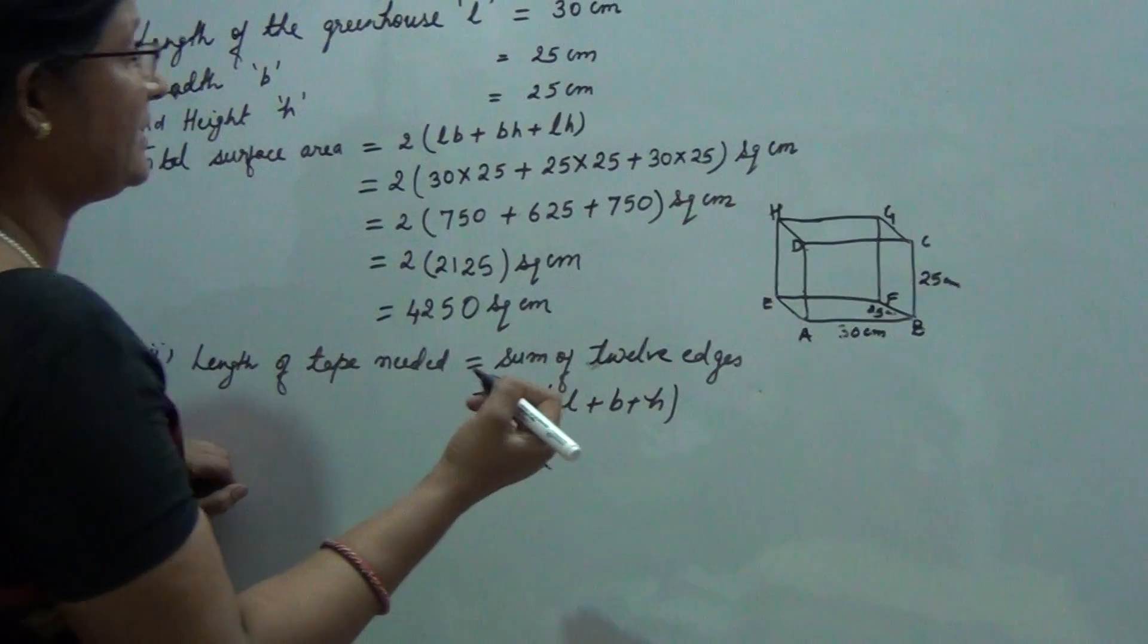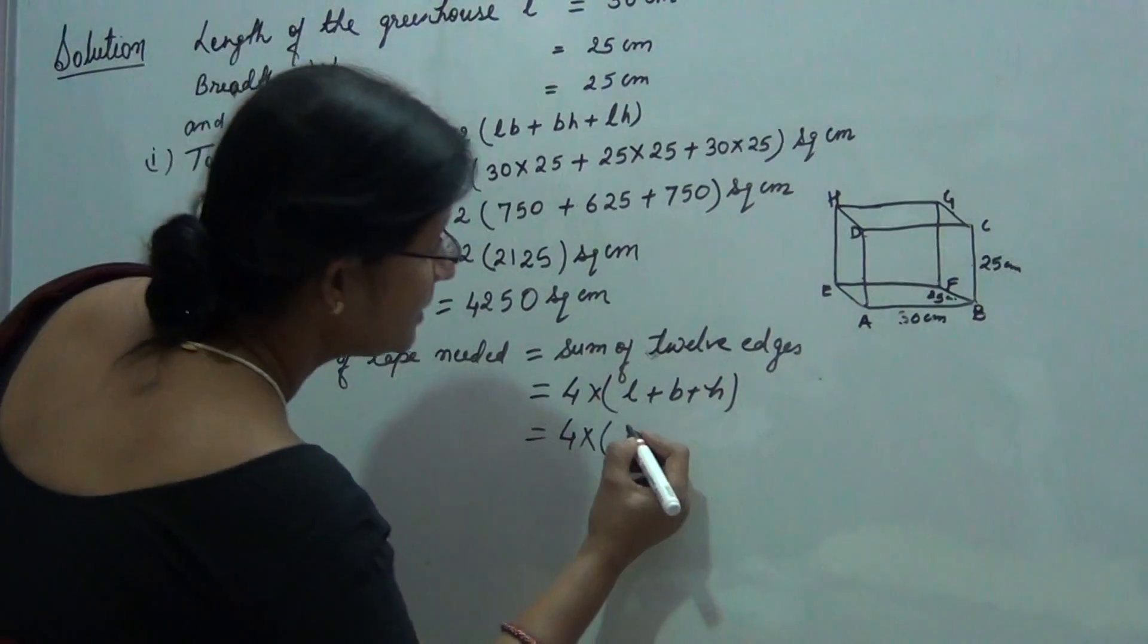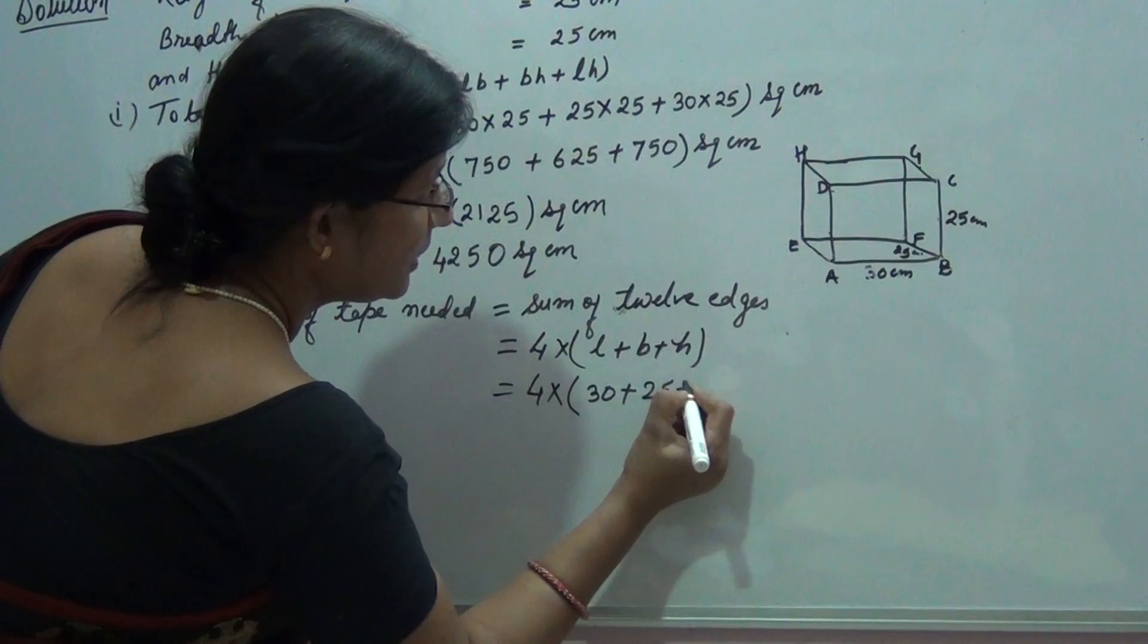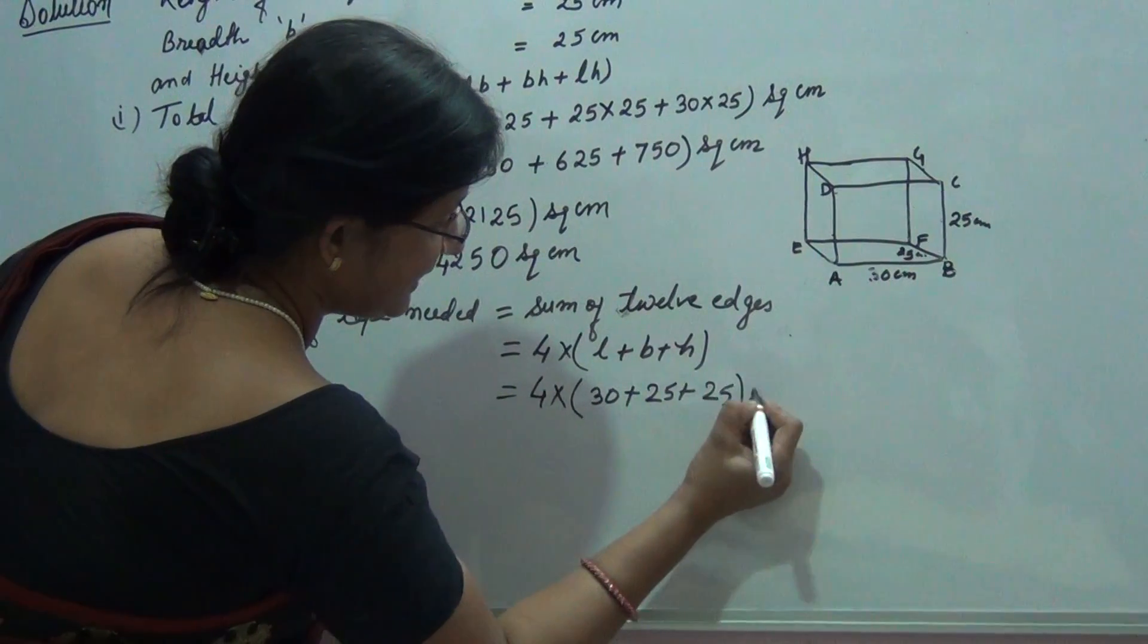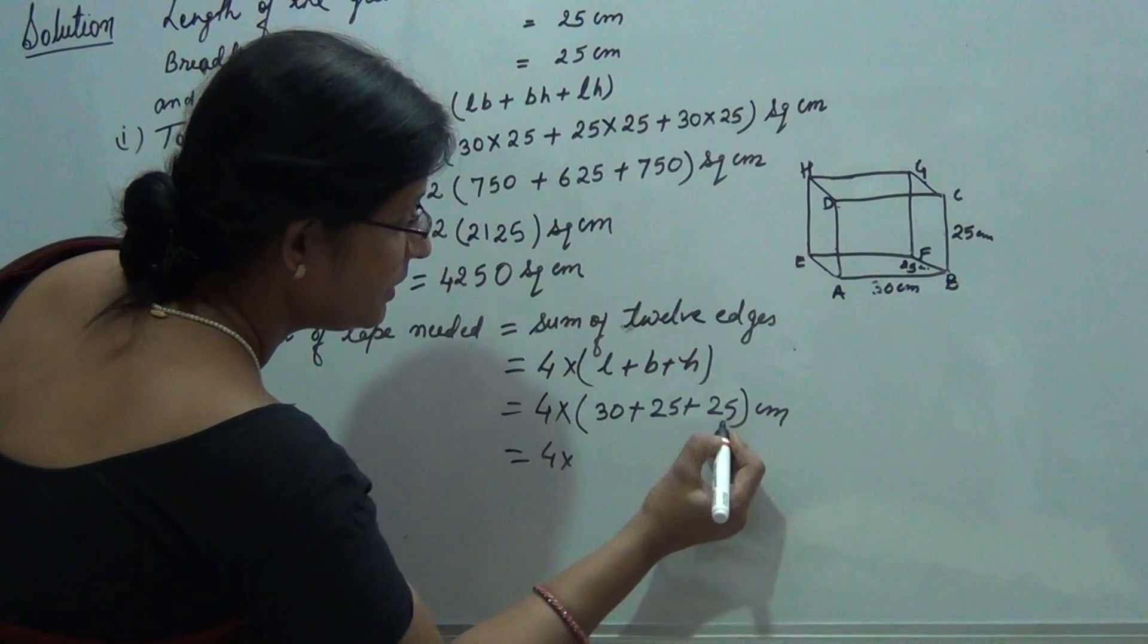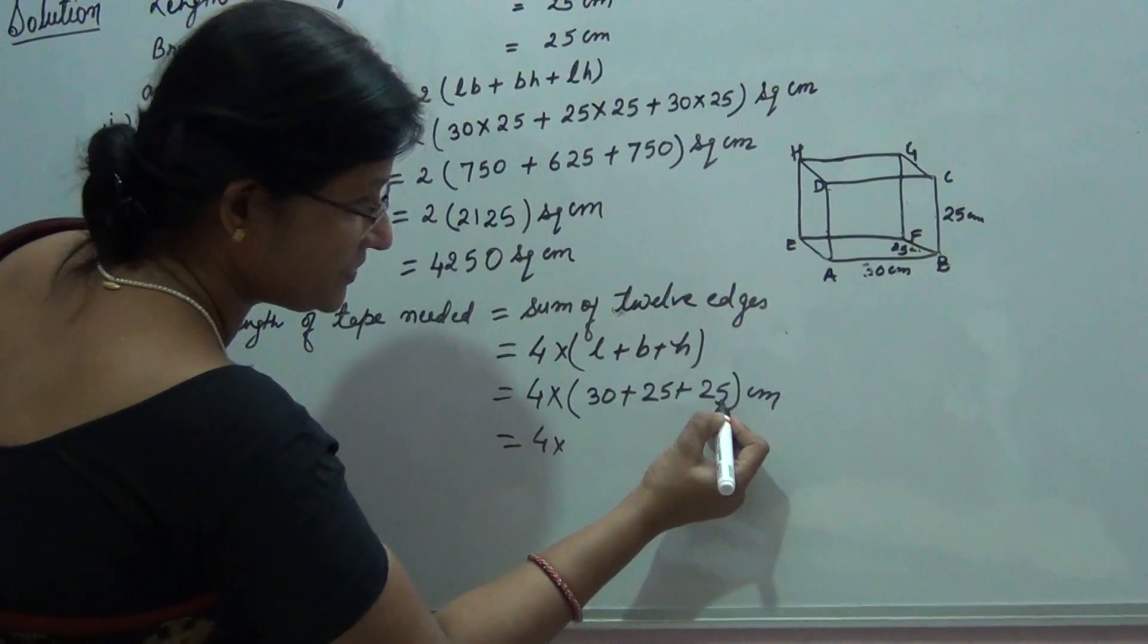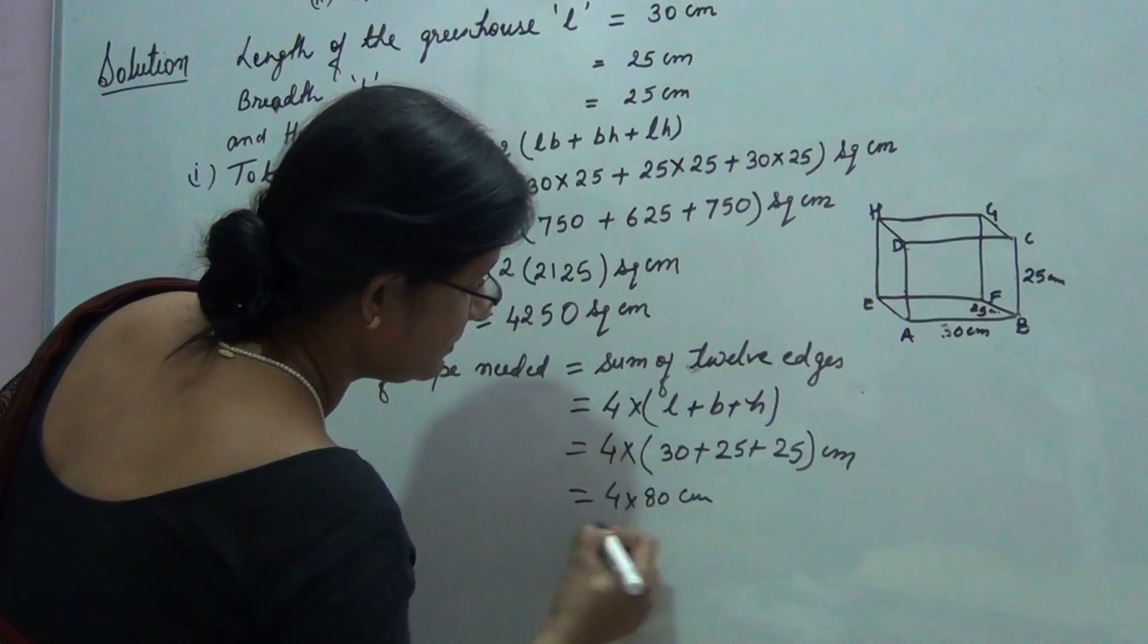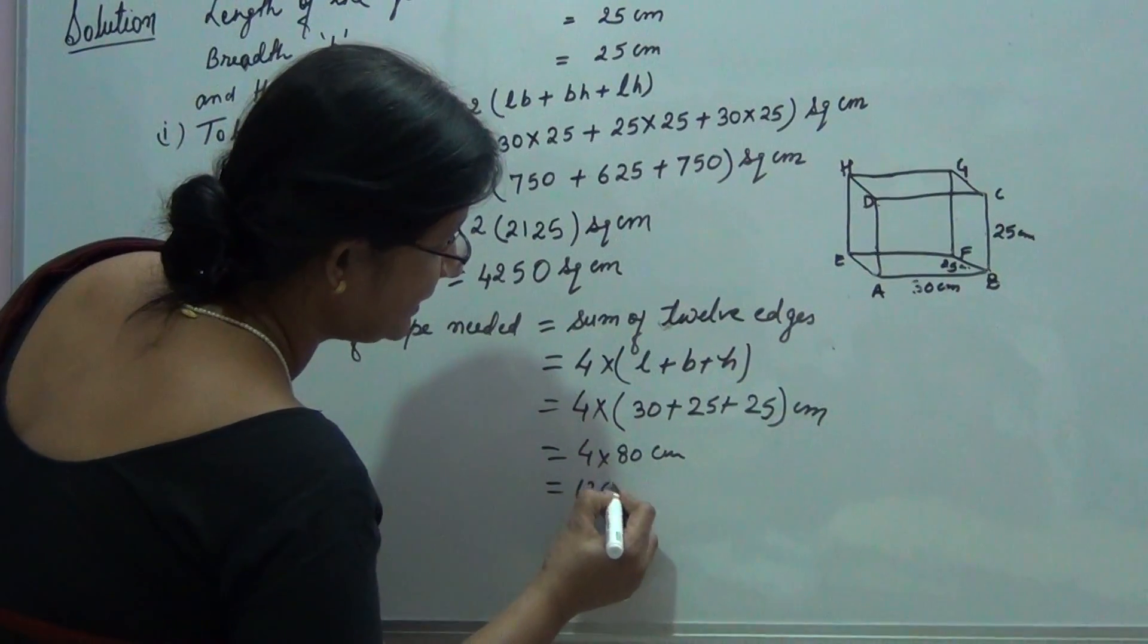So 4 into (30 plus 25 plus 25) centimeter. And this gives us 4 into 80 centimeter, and this is 320 centimeter.